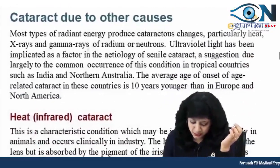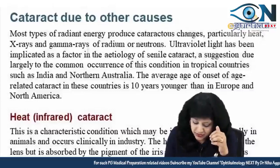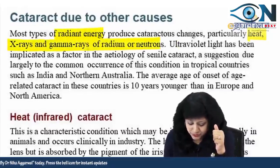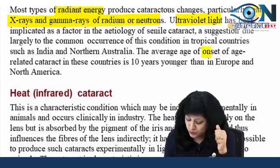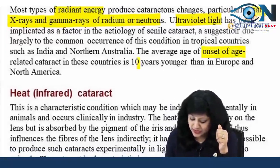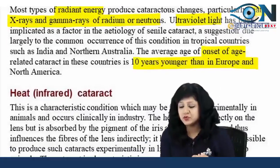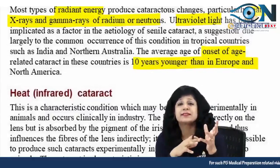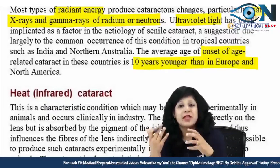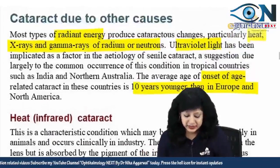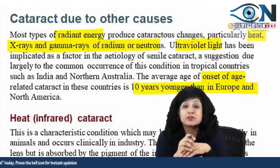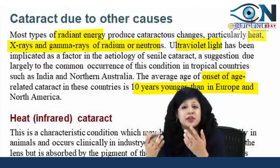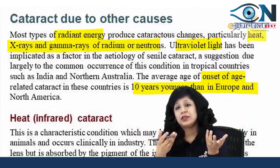Now coming to cataracts due to other causes. We have radiant energy — particularly heat, gamma rays, X-rays, and ultraviolet radiations. The average age of onset of age-related cataract in these countries is 10 years younger than in Europe and North America. Races, genetics, climate, and environmental factors are all very important. Radiations causing cataract include ionizing radiations such as X-rays, gamma rays, neutrons, and non-ionizing radiations such as infrared rays — ionizing radiations being more dangerous.